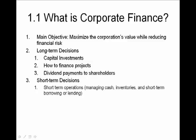However, the way decisions are made in corporations is very similar to how other forms of businesses make decisions. There are two broad decisions that are made in corporate finance: long-term and short-term decisions. Long-term decisions are generally capital investments like what projects to finance, how to finance projects, and dividend payments to shareholders. Short-term decisions generally involve the day-to-day operations of the corporation, such as managing cash, inventories, and short-term borrowing or lending.